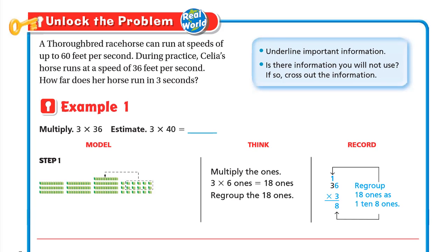Let's unlock the problem. A thoroughbred racehorse can run at speeds of up to 60 feet per second. During practice, Celia's horse runs at a speed of 36 feet per second. The important information is that Celia's horse runs at 36 feet per second, and the question is: how far does her horse run in three seconds?